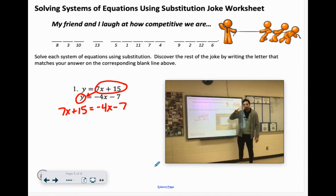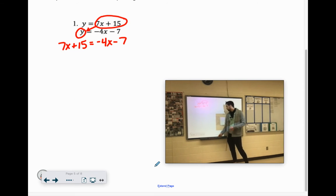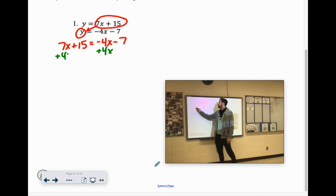Your whole goal is you want it to be either all x's or all y's. We're going from two variables down to one. So if we were to continue solving this, we could add 4x to both sides. 7x plus 4x is 11x plus 15 equals negative 7.